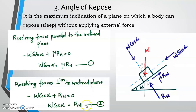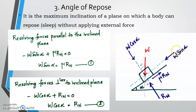For the inclined plane, considering parallel forces: W sin alpha acts downward along the plane and mu into Rn acts upward. Taking upward as positive and downward as negative: minus W sin alpha plus mu·Rn equals zero, so W sin alpha equals mu·Rn. This is equation 1.